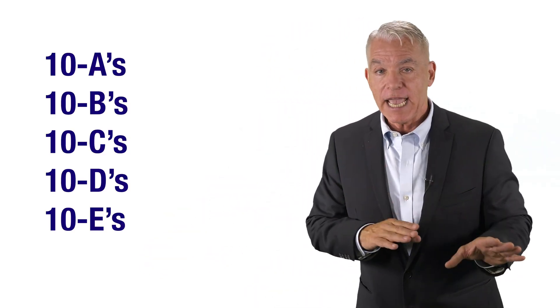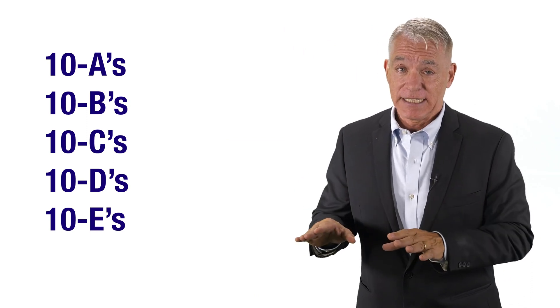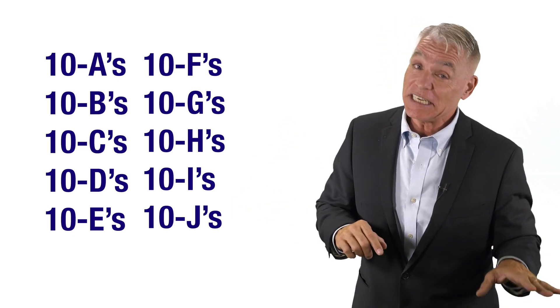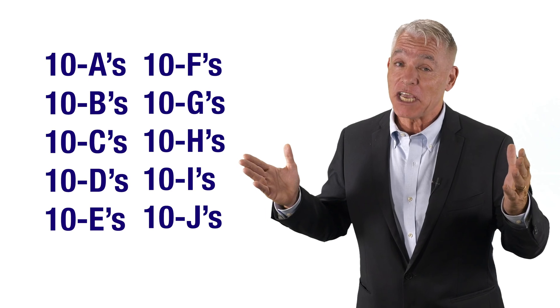We're going to start by entering 10 A's, 10 B's, 10 C's, 10 D's, 10 E's, 10 F's, 10 G's, 10 H's, 10 I's, and 10 J's. In the following video I'm going to show you the steps it takes to install the 10 light fixtures listed above in software package number one. So let's begin.